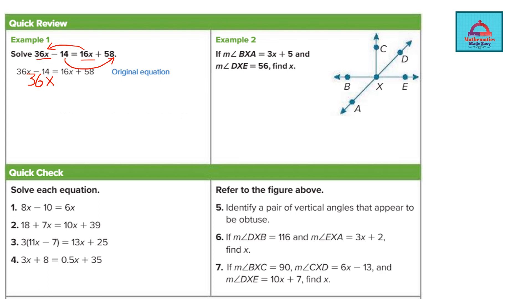So 16x was positive on the right it becomes minus 16x on the left side. Minus 14 moves on the right becomes positive, so 58 plus 14.